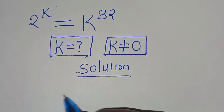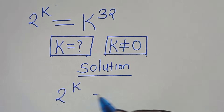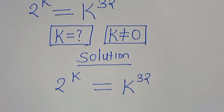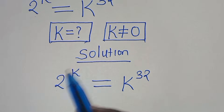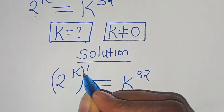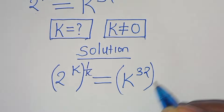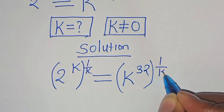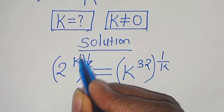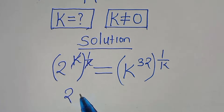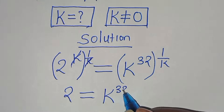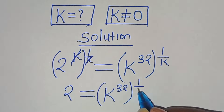We have 2 to the power of k equals k to the power of 32. The first step is to eliminate the power of k on the right side. To do this, we multiply both sides by 1 over k, so now we have 2 equals k to the power of 32 raised to the power of 1 over k.